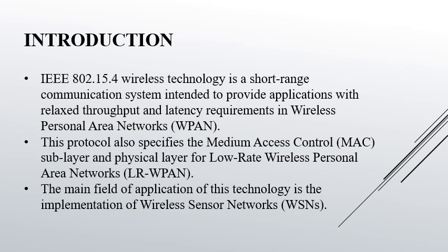IEEE 802.15.4 wireless technology is a short-range communication system intended to provide applications with relaxed throughput and latency requirements in wireless personal area networks. This protocol also specifies the medium access control sublayer and physical layer for low-rate wireless personal area networks. The main field of application of this technology is the implementation of wireless sensor networks.